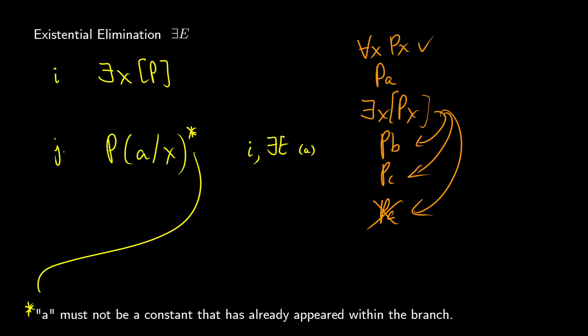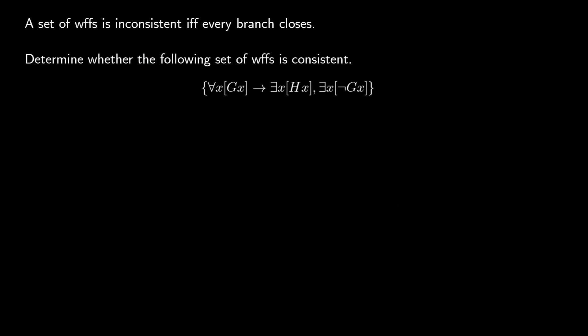A reminder for truth trees: a set of formulas is inconsistent if every branch closes. If you don't know what a truth tree is, I have videos in propositional logic that cover the basics. We're going to assume all the rules of propositional logic and we're just adding new rules for predicate logic.